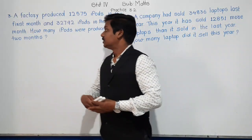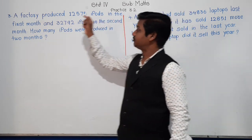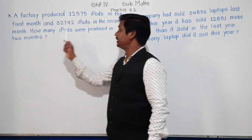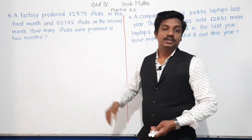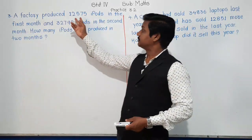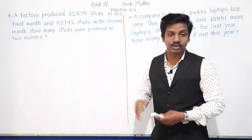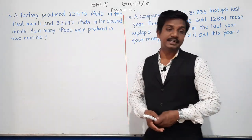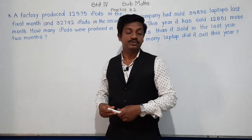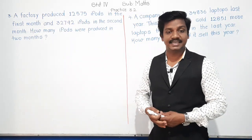Let us move towards the next problem — problem number 3. A factory produced 12,575 items in the first month and 32,792 items in the second month. How many items were produced in the 2 months? That factory produced some items every month. In the first month, 12,575 items, and in the second month, 32,792 items. In both months together, how many items were produced? We have to do addition here.